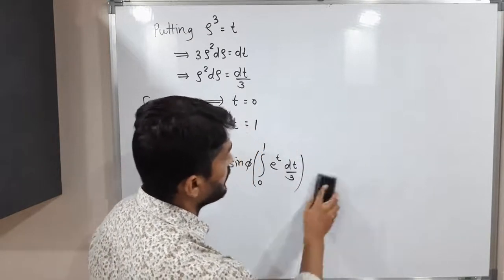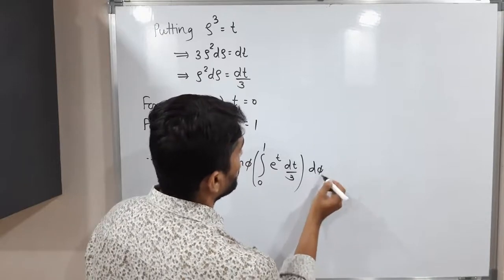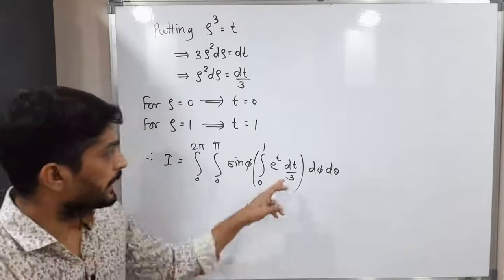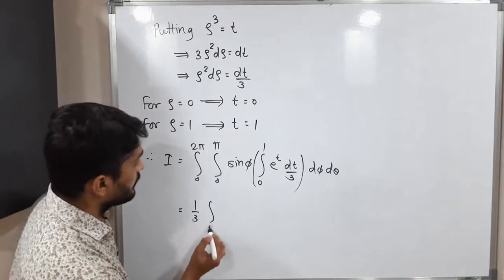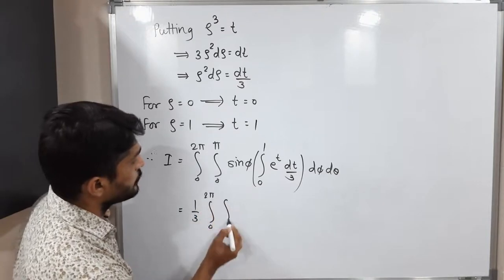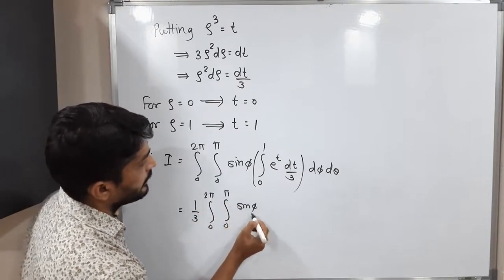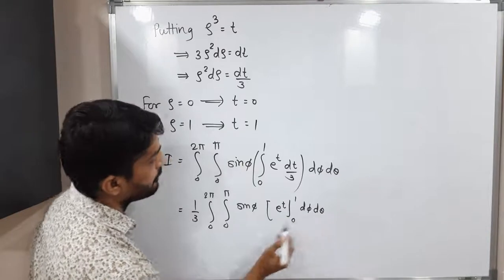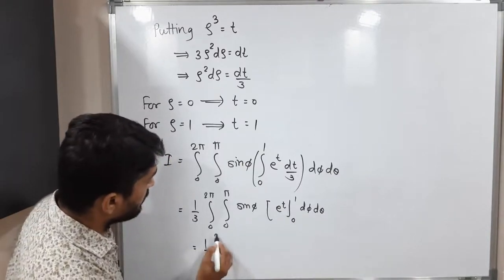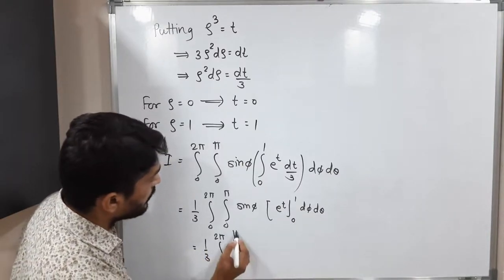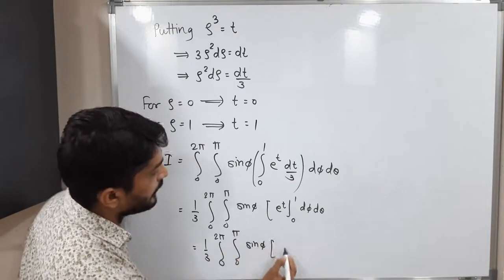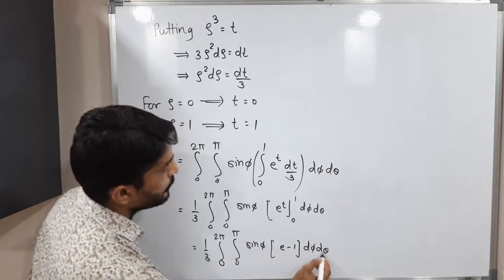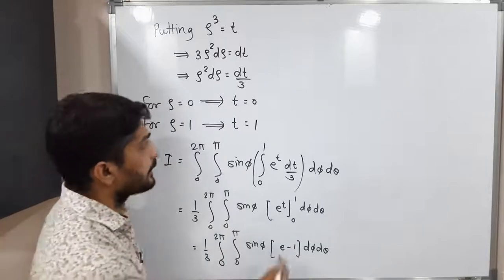Therefore the integral becomes: (1/3) integration from 0 to 2π, integration from 0 to π of sin φ, integration from 0 to 1 of e^t dt, dφ dθ. We can take the (1/3) outside. The integral of e^t from 0 to 1 gives e¹ - e⁰ = e - 1, which is a constant.